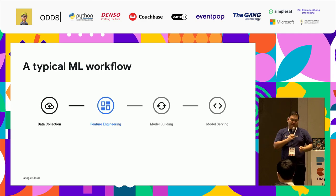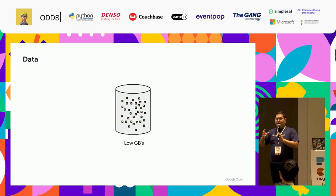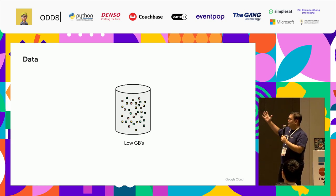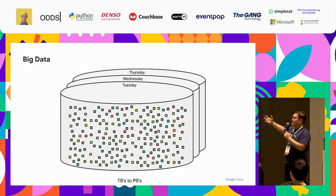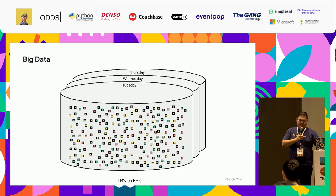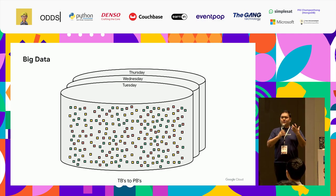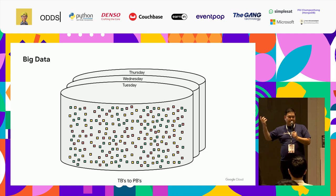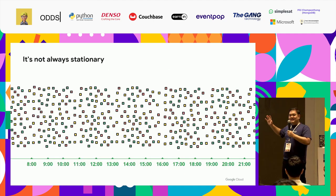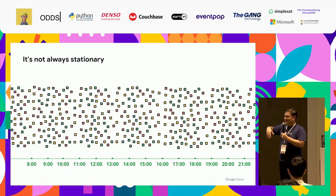In the past, data was small enough to fit on a laptop or server with a monolith architecture. But nowadays data is really big — transaction data could be terabytes to petabytes per day depending on company size. Processing that amount requires parallel processing and you have to think about missing data, because there's a much higher chance of something going wrong with large data. And sometimes data is not stationary — it's streaming.